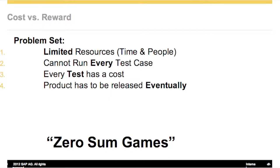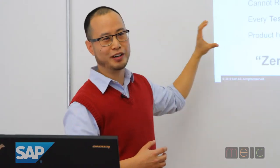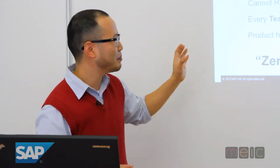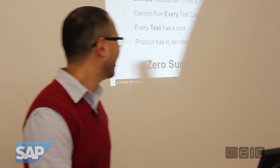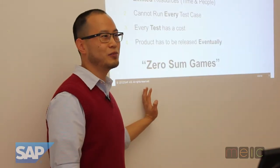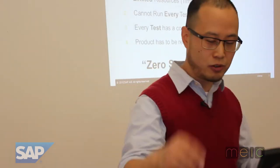The problem set is that we have limited resources — both time and people — and we can't run every test case. Every test is a cost, whether it's manual testing or automated. But the idea is that eventually the product is released. I have yet to work on a project where the goal was not to release. There is some event horizon — it's not so far off where the line has turned into a dot. So we're talking about zero-sum games. That's some of the boundaries of what we're talking about in testing.